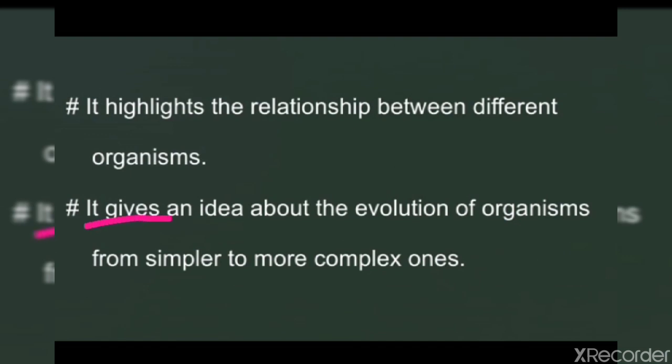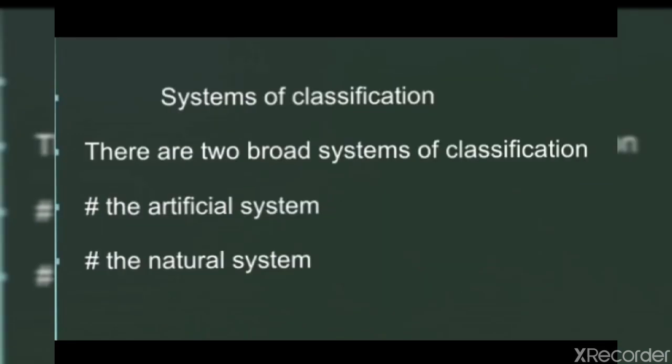Next and last, it gives an idea about the evolution of organisms from simpler to more complex ones. Evolution is the way in which living things change and develop over millions of years. Evolution is a process that results in changes in the genetic material of a population over time.